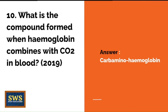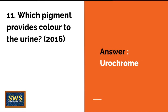Question 10: What is the compound formed when hemoglobin combines with carbon dioxide in blood? This is from the 2019 paper. The correct answer is carbaminohemoglobin — a question which many students got wrong, so please pay attention. Question 11: Which pigment provides color to the urine? From the 2016 paper. The correct answer is eurochrome.